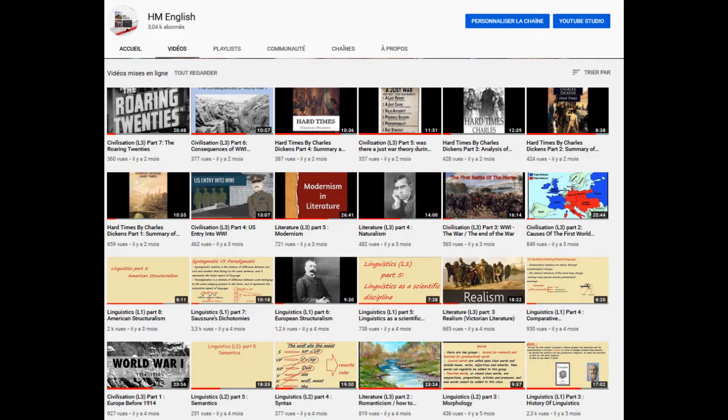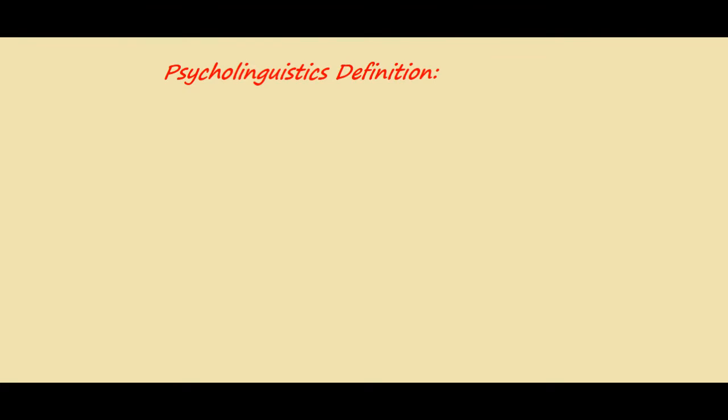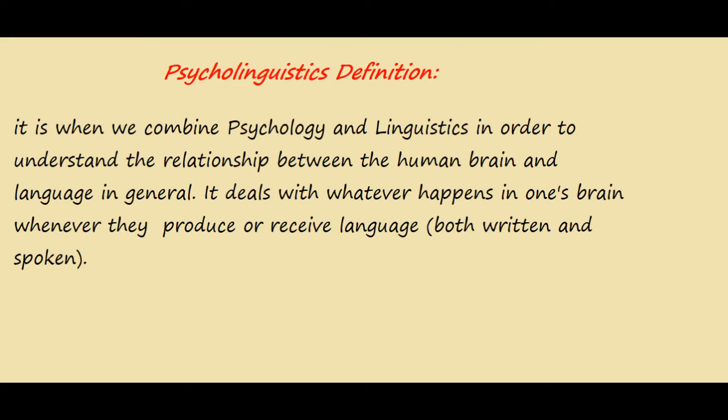Without any further ado, we shall start with the definition. The word 'psycholinguistics' has actually two words inside: we have 'psycho,' which comes from the word psychology, and 'linguistics,' of course from the word linguistics. So to define it in a simple way, psycholinguistics is when we combine psychology and linguistics.